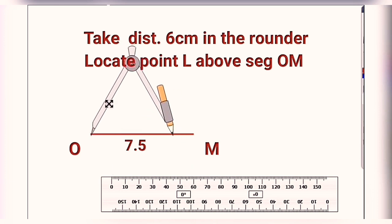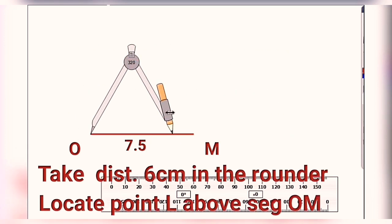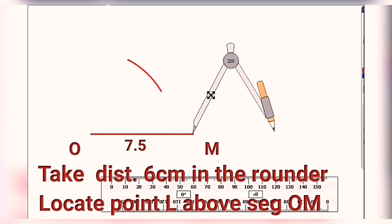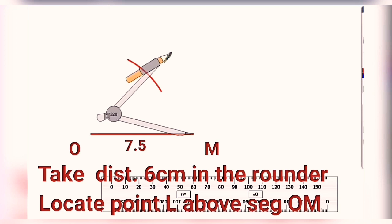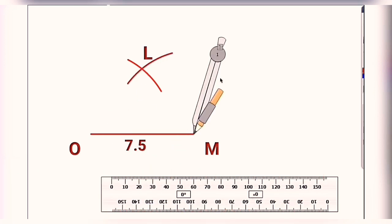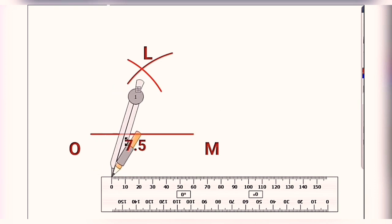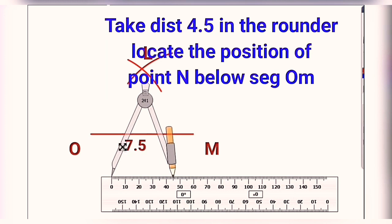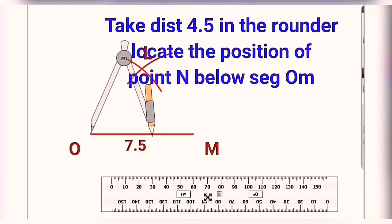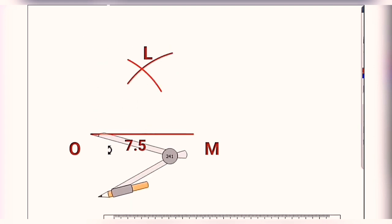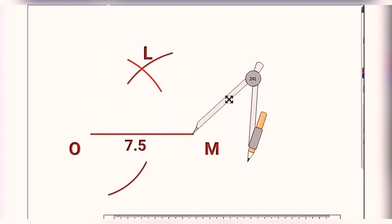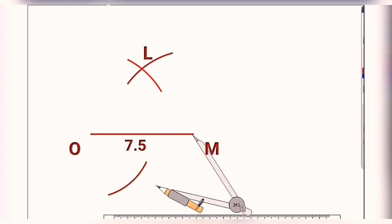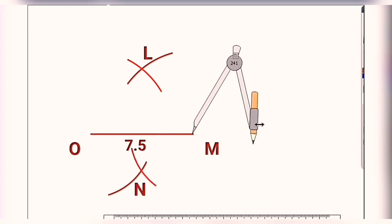Next, we will plot point L above segment OM by taking a distance of 6 centimeters, because OL and ML are the same length. The intersection of these two arcs is point L, already marked. After that, below the segment, we mark point N by taking distance 4.5, because ON and NM are both equal to 4.5. Draw the arcs and the intersection gives point N.